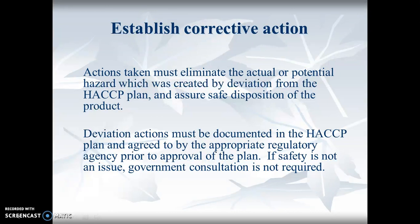Deviation actions must be documented in the HACCP plan and agreed to by the appropriate regulatory agency prior to approval of the plan, to confirm that what you're going to do is really going to be good enough. If safety is not an issue, government consultation is not required. If it's just for your own quality inside the plant, then you don't have to involve the USDA, FSIS, or FDA.